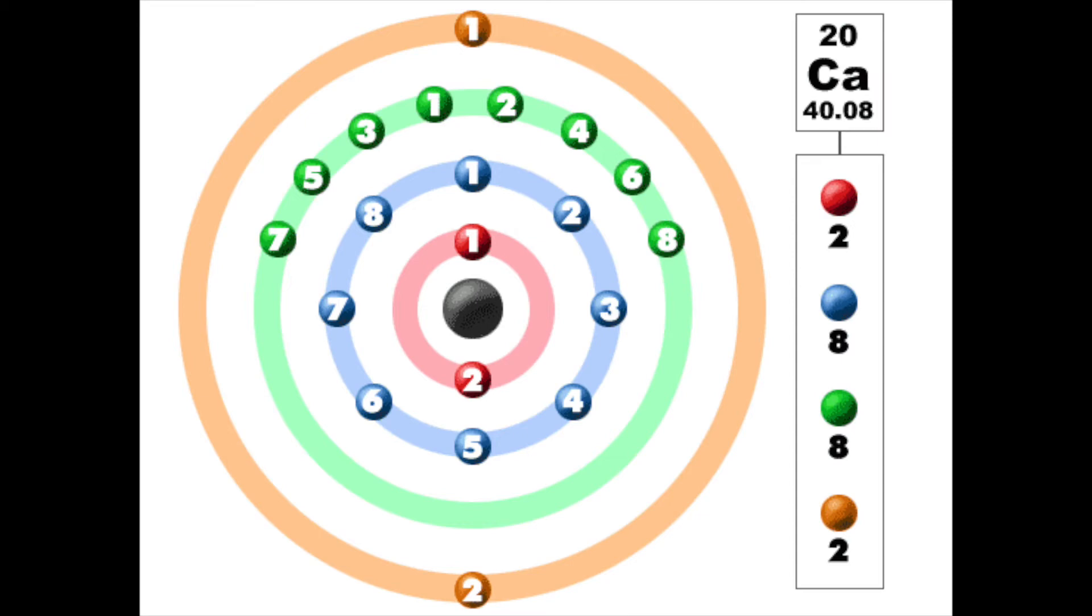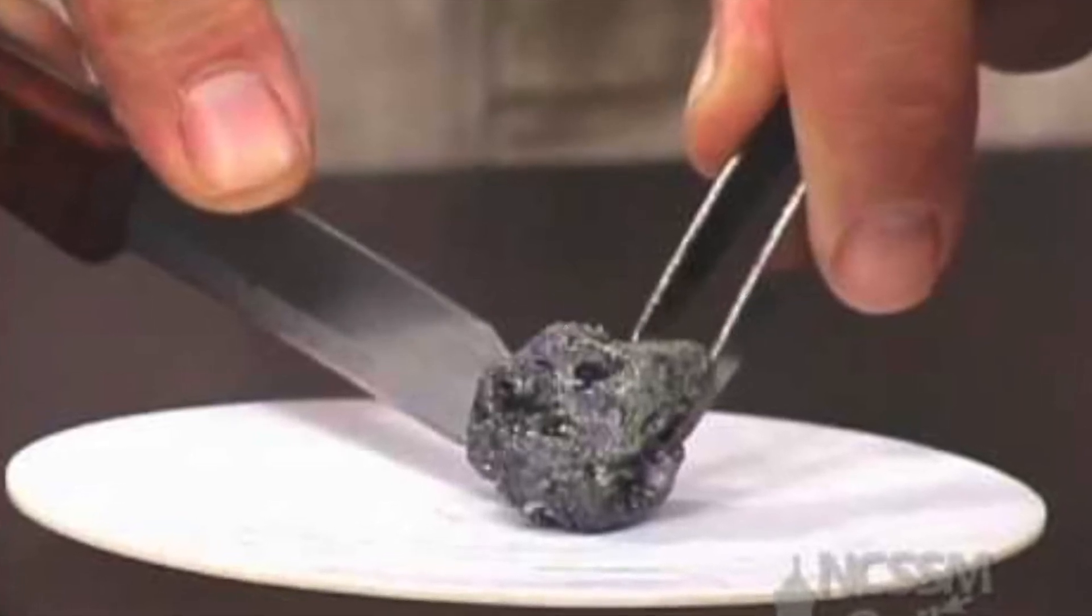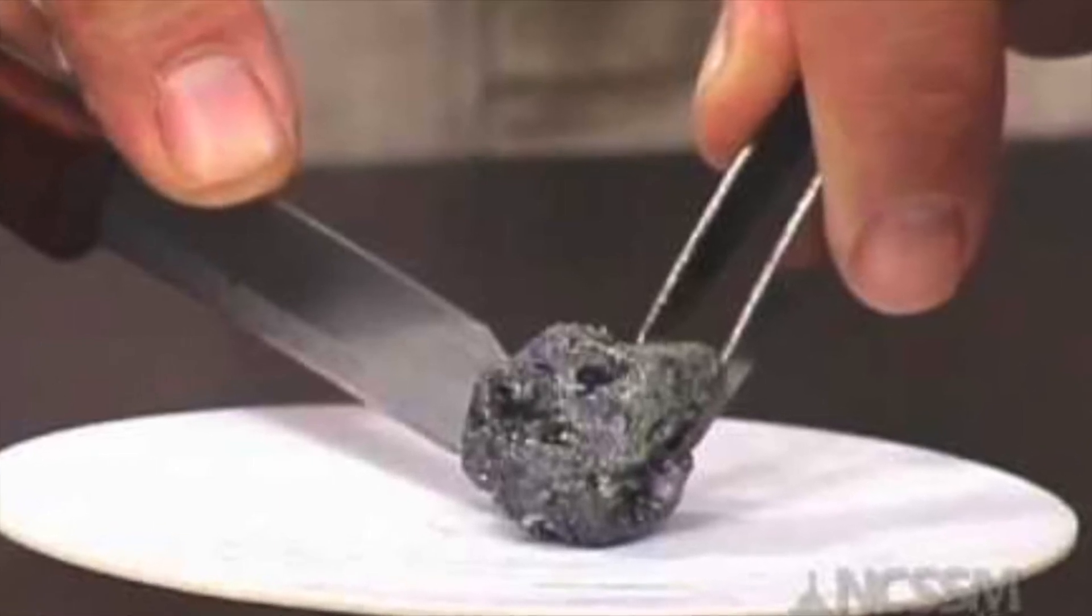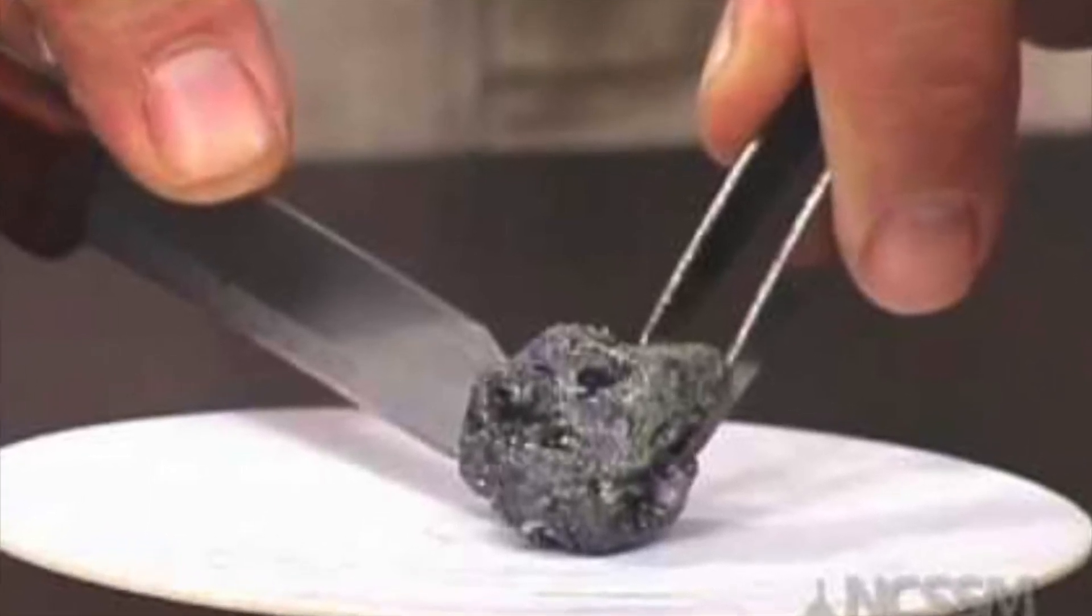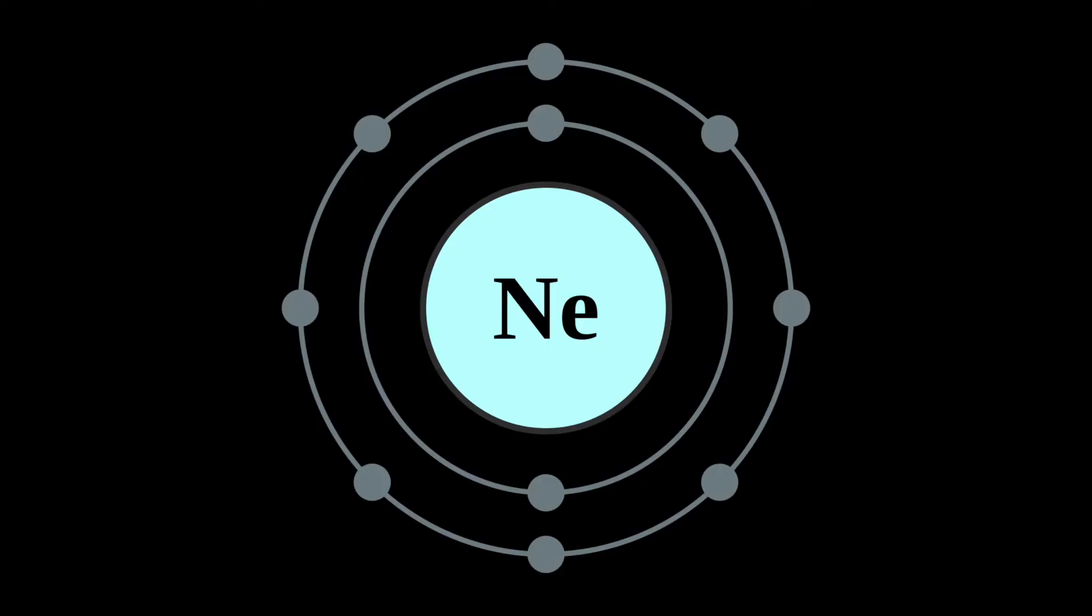So now we'll go on to chemical bonding. First of all, what matters is what it has on its outer shell. Things like potassium, for example, are very reactive because they only have one on their outer shell, which means they only have one to lose. However, things like neon and argon, which are both noble gases, are very unreactive because they have a full outer shell.